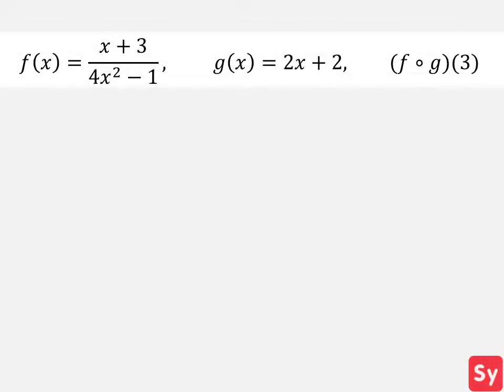Last example, we have f of x equals x plus 3 divided by 4x squared minus 1 and g of x equals 2x plus 2. We want to calculate f composed with g of 3. First we have to calculate g of 3. We plug 3 in for x in g of x. We then simplify and get 8.